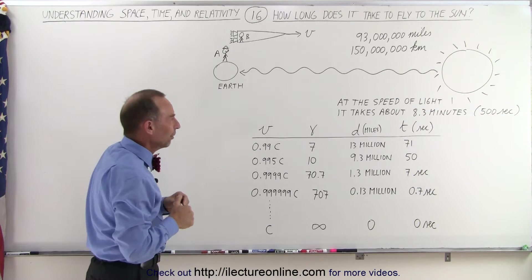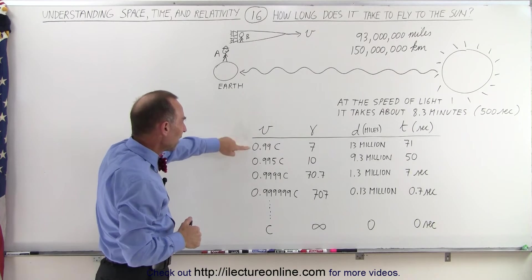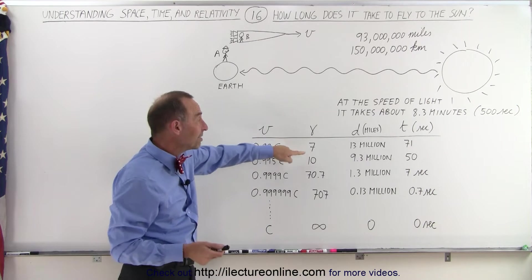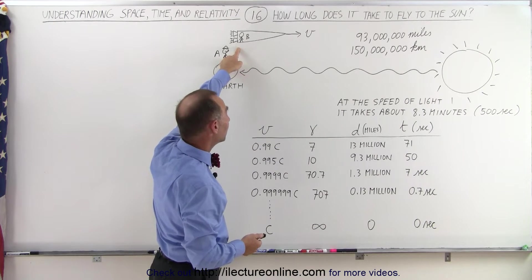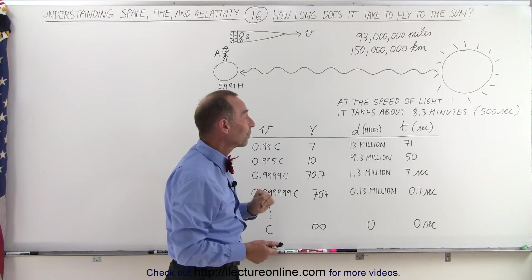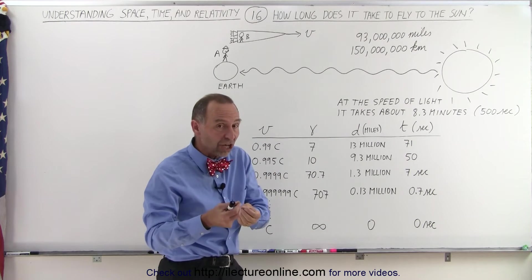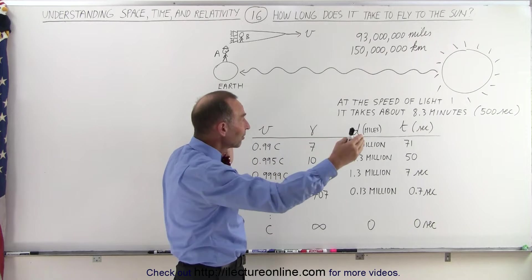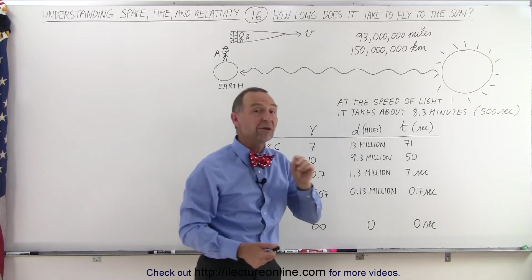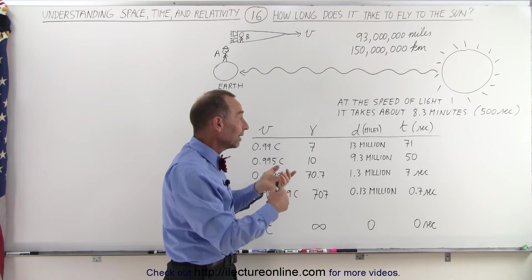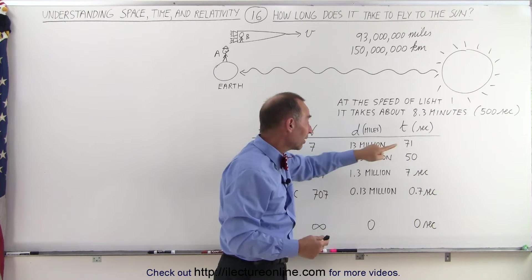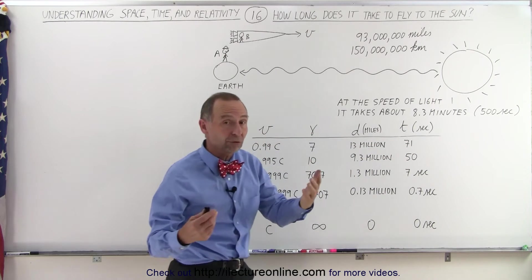So let's take a look at some numbers here. Let's say that we're traveling at 0.99c. The Lorentz factor is therefore 7, which means that the distance, according to Observer B here, only appears to be 13 million miles instead of 93 million miles. And it turns out that with the change in time, the time, instead of 500 seconds moving at that speed of 0.99c, that time would only last 71 seconds. So it turns out that, yes indeed, if you were to travel at nearly the speed of light for 71 seconds, you would travel a distance of 13 million miles.